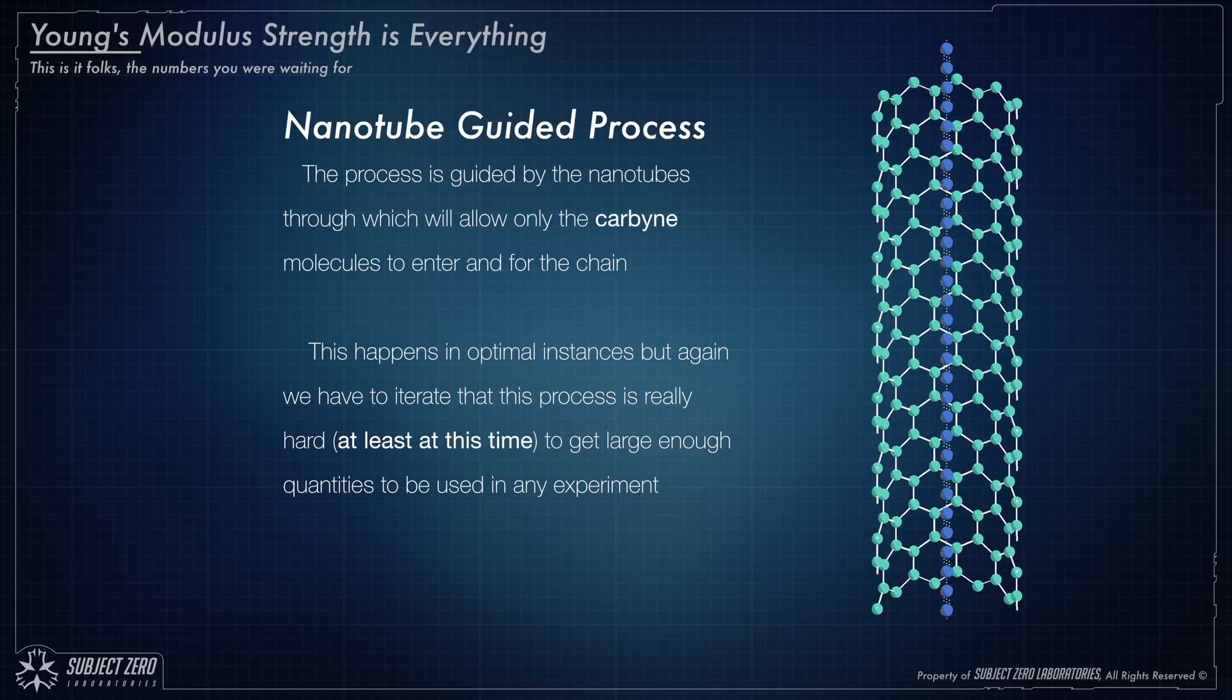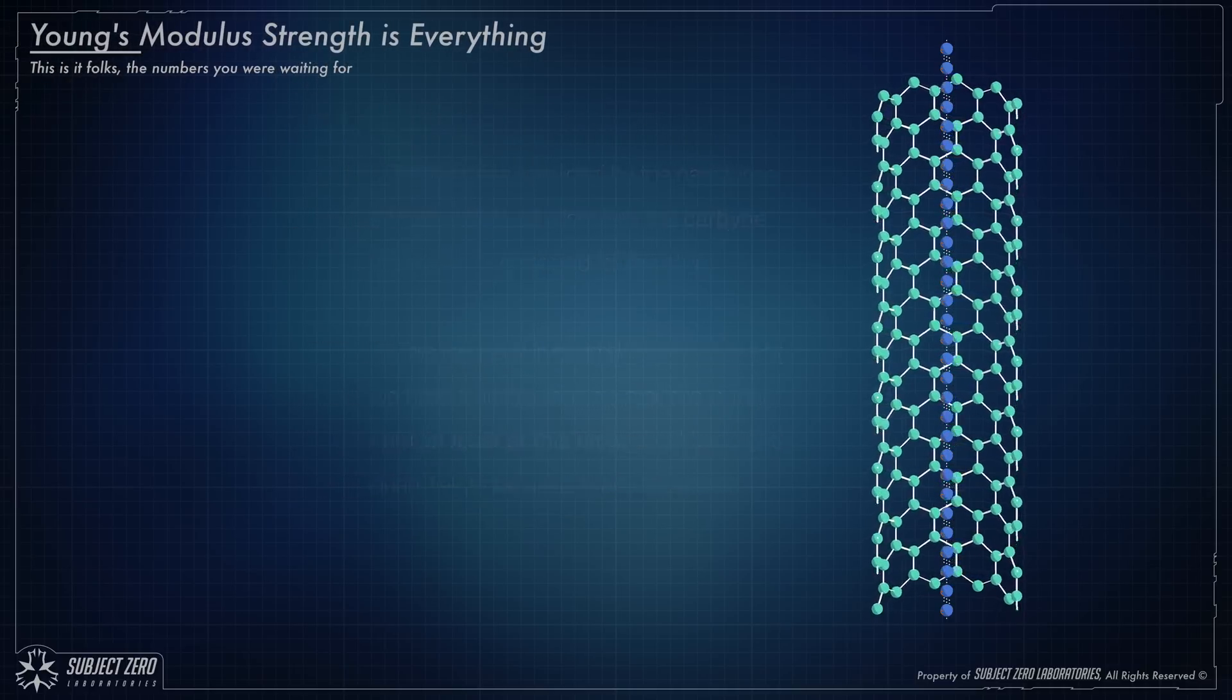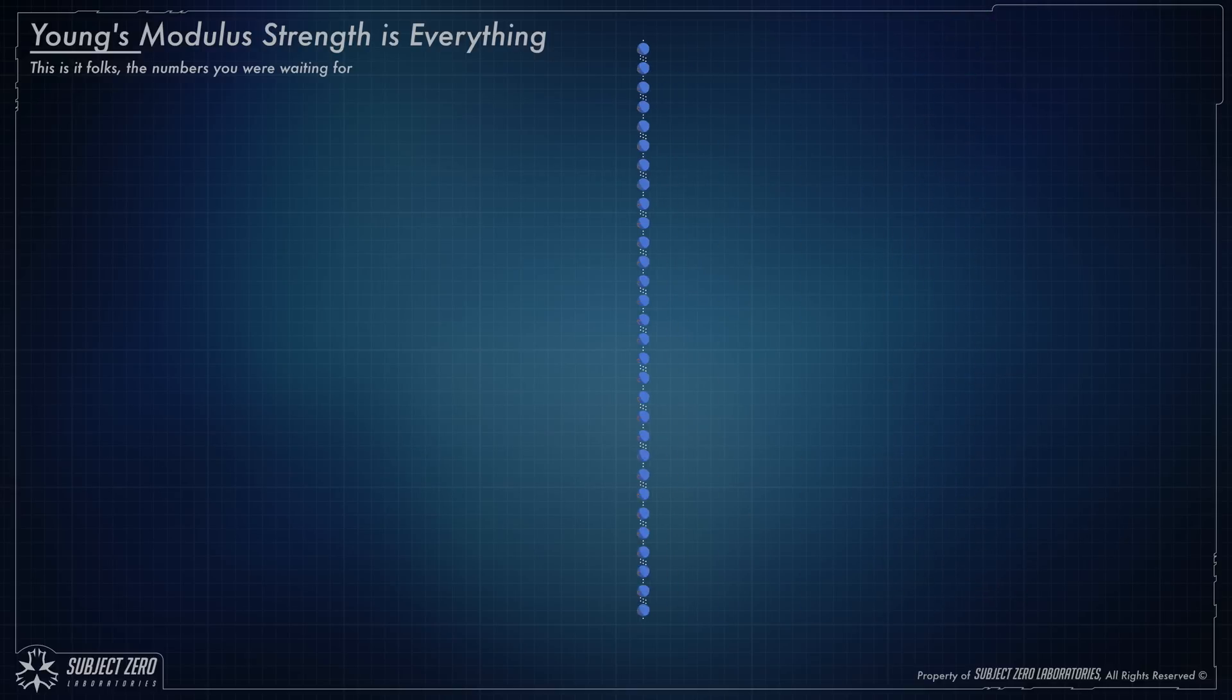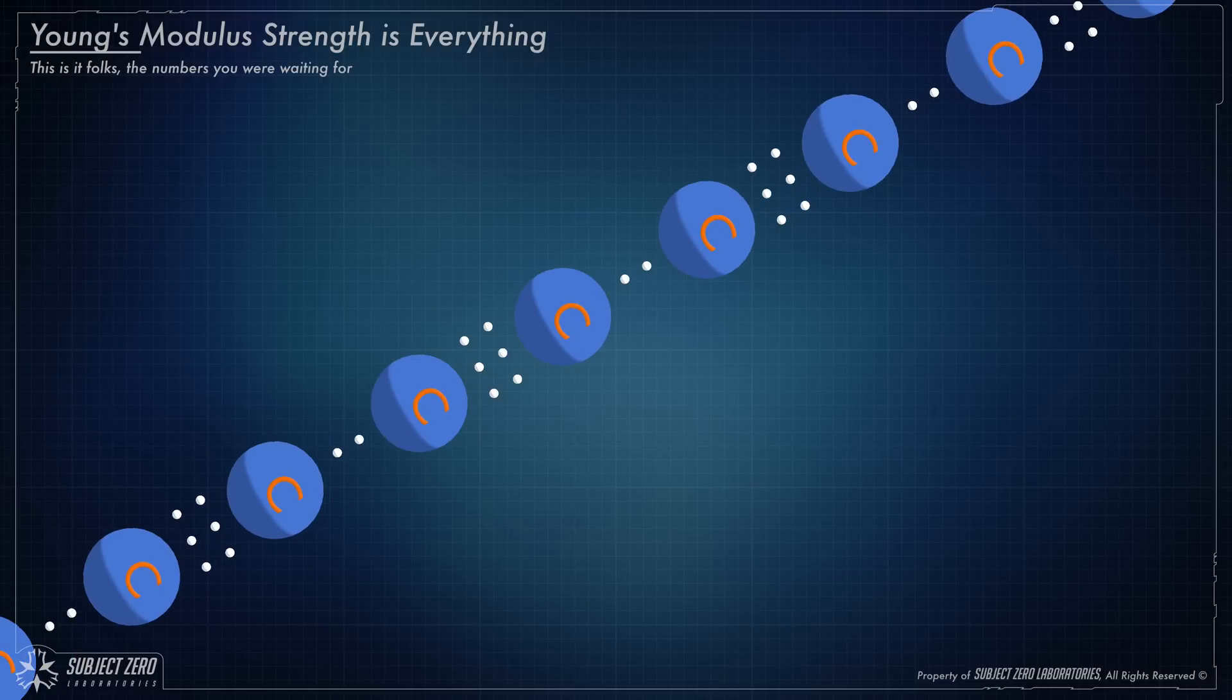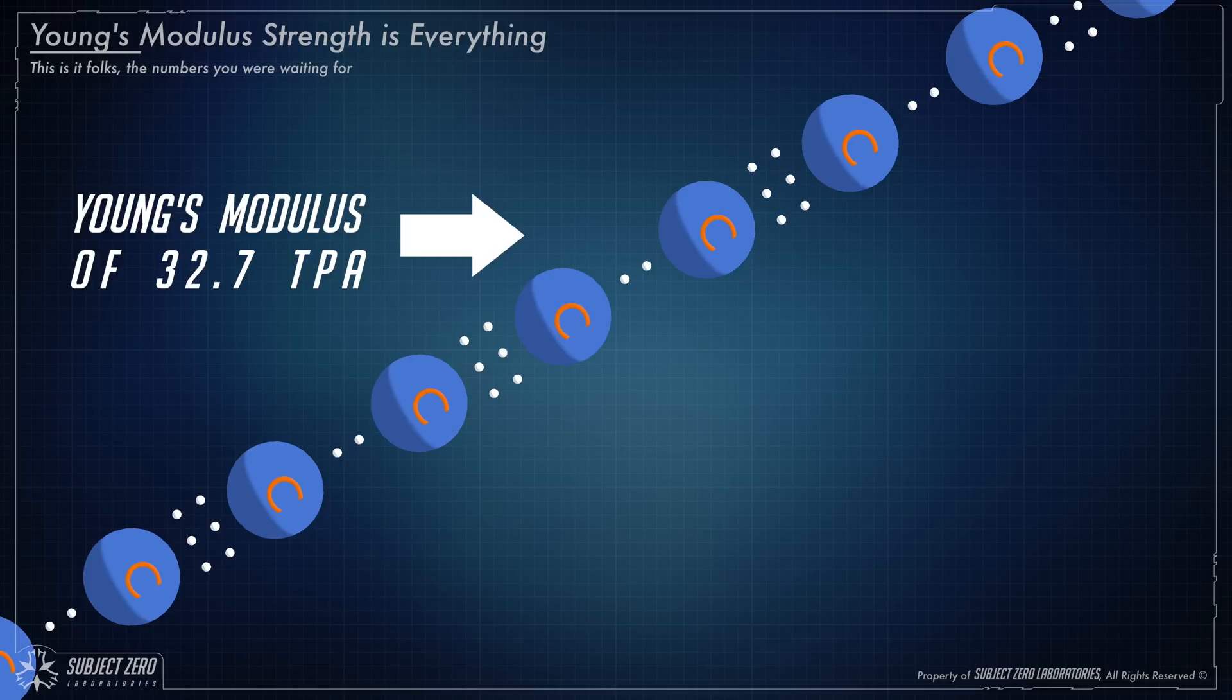However, some cleverness and the top minds in the job actually managed to get some numbers. And they are incredible to say the least. Yes, my dear viewer, we are talking about a really strong material. And scientists have concluded that it has a young modulus of 32.7 Tera Pascal.